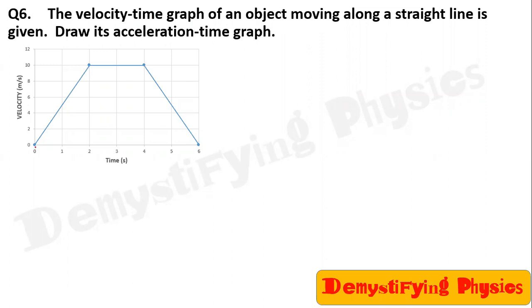Now observe the graph. First, the body is moving with uniform acceleration till 2 seconds. And then the body moves with constant velocity and then it moves with uniform retardation.